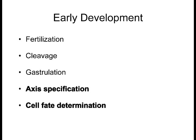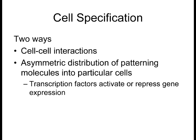Cell specification. There are three types of cell specification: autonomous, conditional, and syncytial. If you break down all three, there are really two major factors in specification. Number one is cell-cell interactions, which is mainly included in conditional specification. The second way involves syncytial and autonomous specification, where you have an asymmetrical distribution of either RNA or proteins or both — transcription factors that activate or repress various genes.